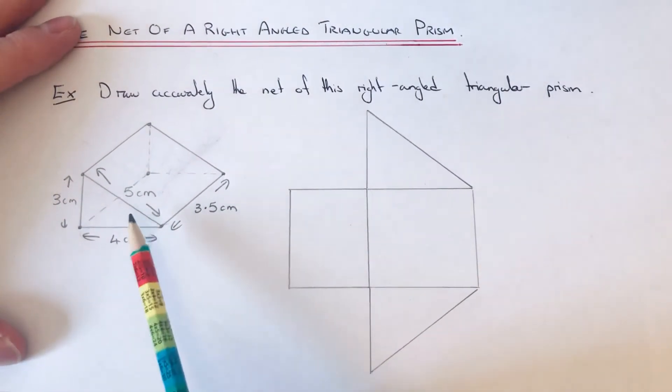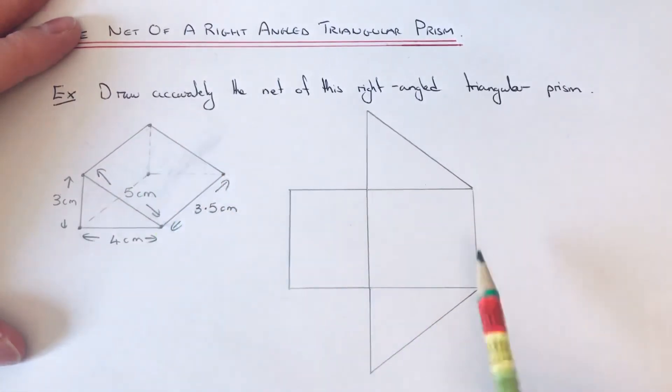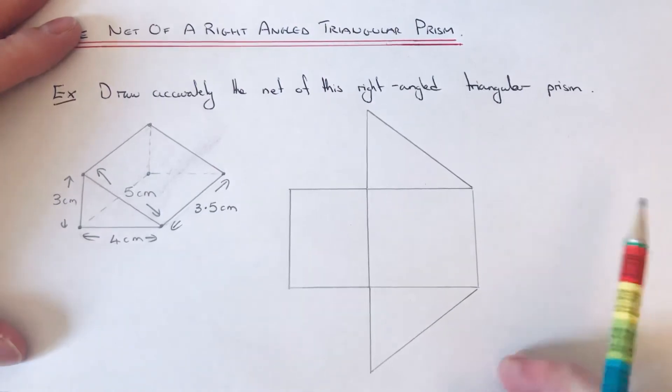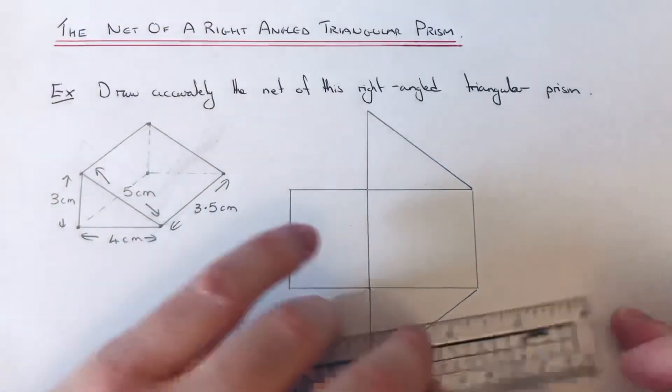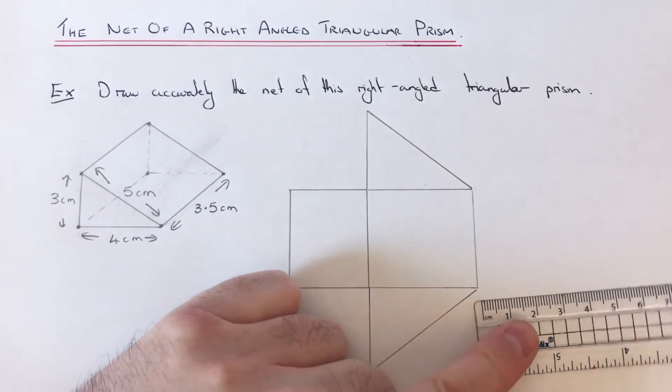Okay, so the sloping face is a 3.5 by five rectangle. We can do this one on this side here, so we just need to go out five centimeters, and that edge is already 3.5.